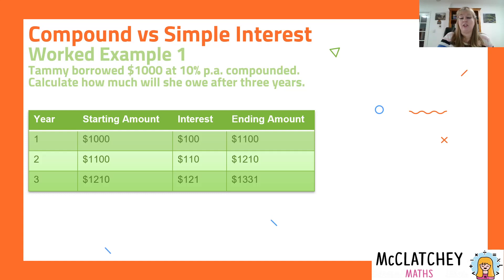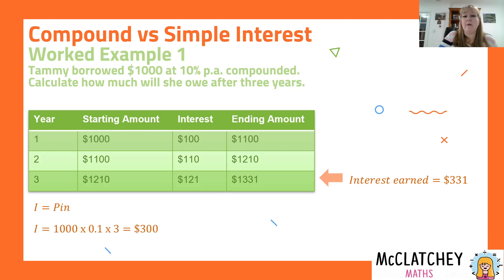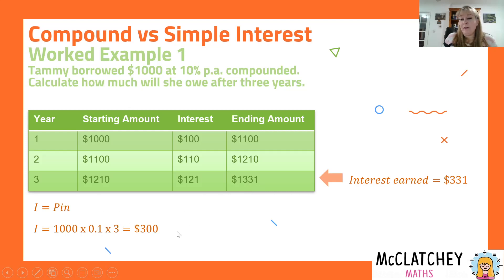We can see by a simple subtraction that $1,331 minus $1,000 means Tammy has paid $331 in interest. How does that compare to simple interest? Using I = PIn, substituting 1,000 × 0.1 × 3 gives $300 in simple interest. So with compound interest, Tammy pays an extra $31, because the amount the 10% is applied to changes every year as it grows. Tammy would have been better off with a simple interest loan paying only $300.